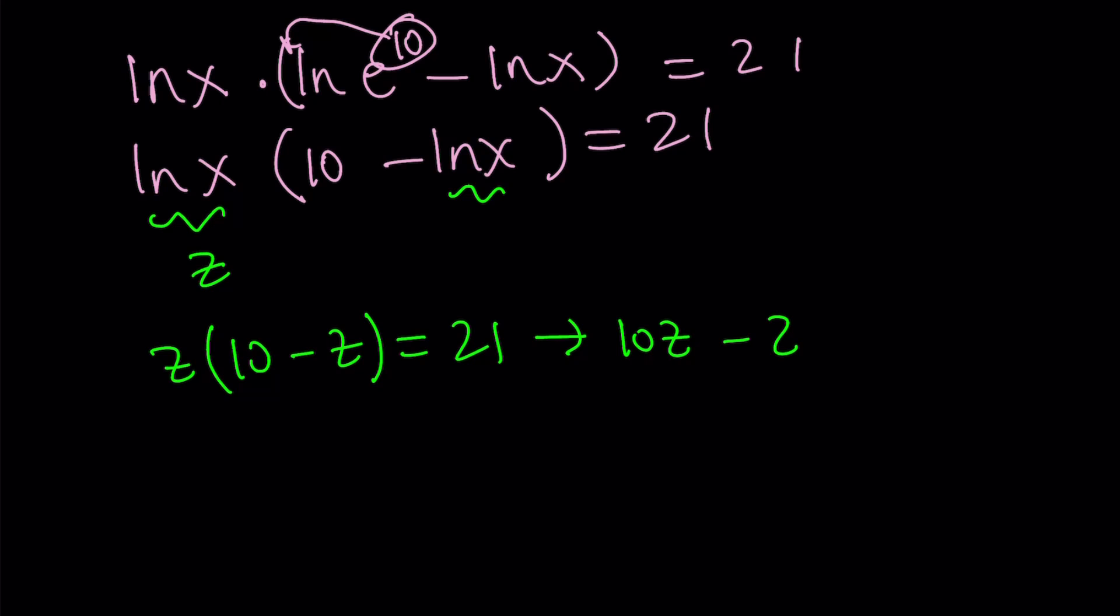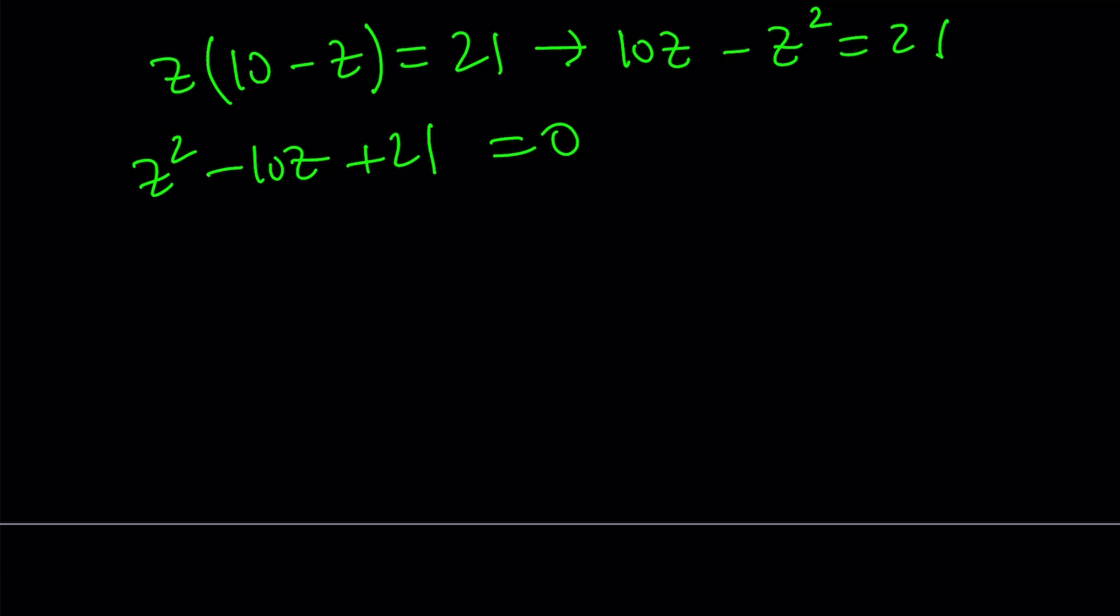And now this can be written as z minus 3 times z minus 7. Because there are two numbers whose product is 21, and whose sum is negative 10. Those numbers are negative 3 and negative 7. And then we can factor like this. Make sense? Hopefully it does.